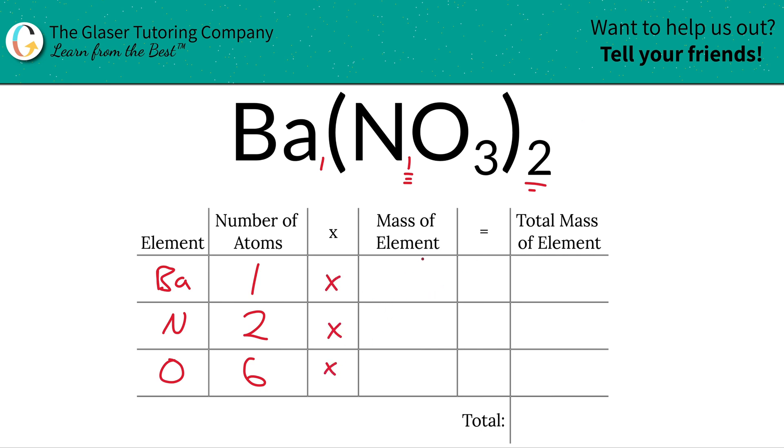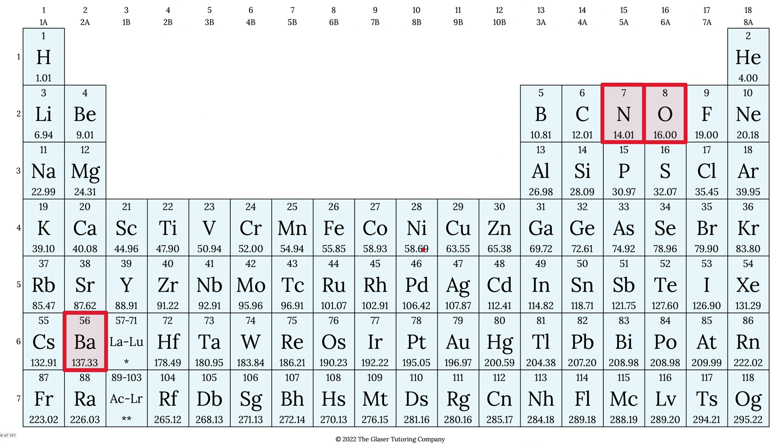Simply then take those values of the atoms, the number of atoms that is, and multiply it by the mass of each element now. So that's where the periodic table comes into play. Barium here has a mass of about 137.33, and nitrogen is about 14, and oxygen is 16. These values represent grams per mole if you're doing molar mass, or AMU if you're doing molecular mass.